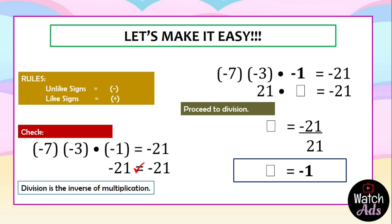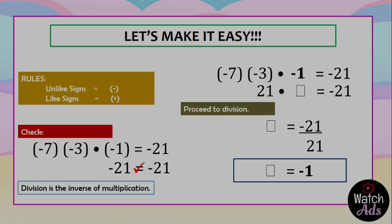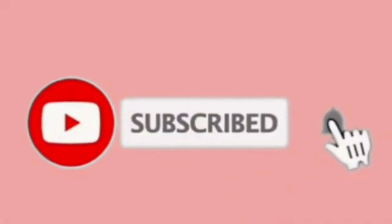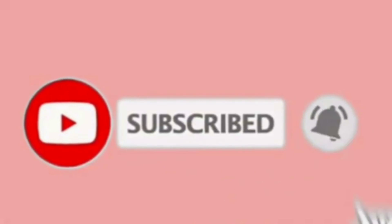That's the end of our lesson on multiplication of integers. Always remember: if you have unlike signs, the product is automatically negative; and for like signs, the product is automatically positive — you just have to multiply the numbers given. Please click the subscribe button and bell button for notifications.